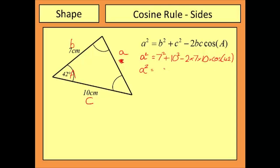Now I can start to tidy this up. So 7 squared is 49, 10 squared is 100. And if I add them together I'm going to get 149. Take away 2 times 7 times 10 which is 140, cos 42.